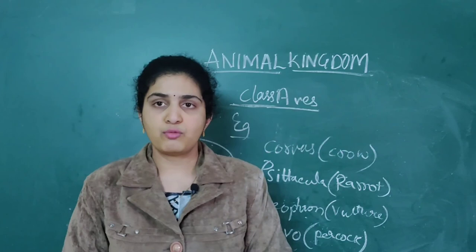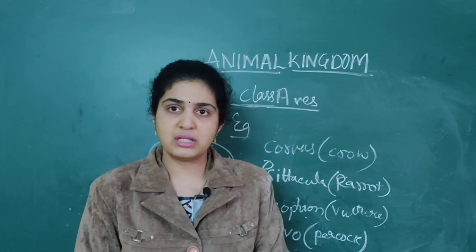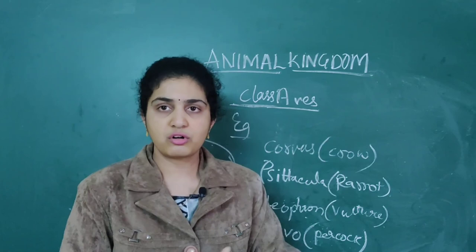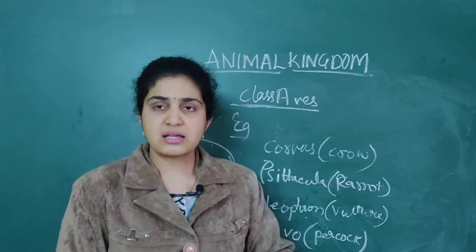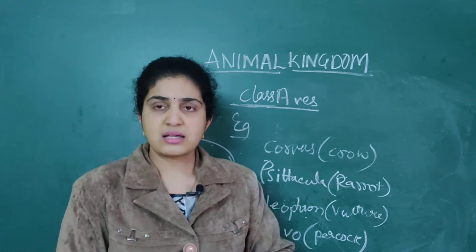In the next class we will continue with class Mammals. Today we have done two classes — Reptiles and Aves. We are still left with Mammals, after which we will complete the Animal Kingdom chapter. Read three or four times so that you can remember easily.